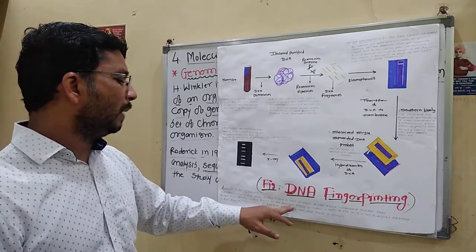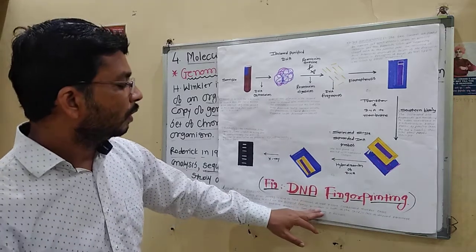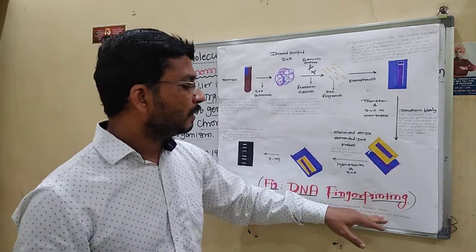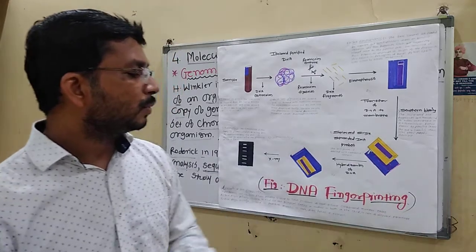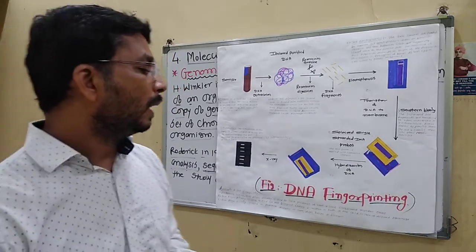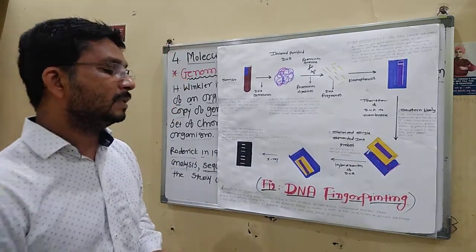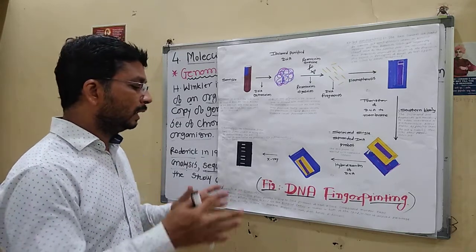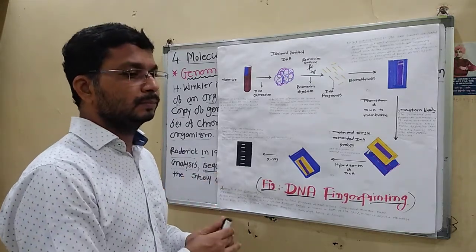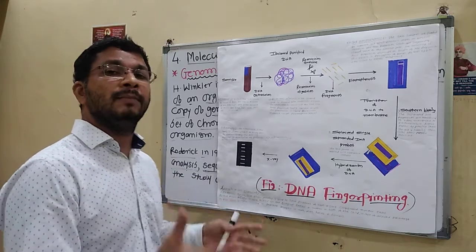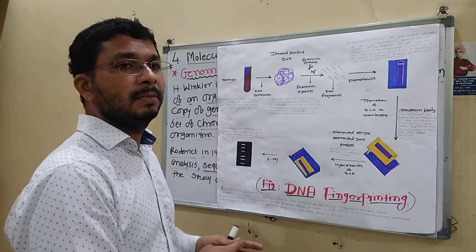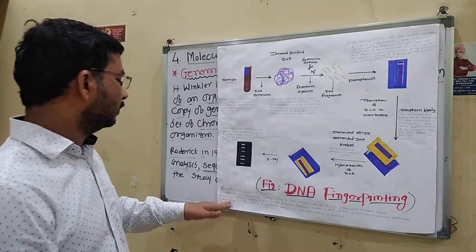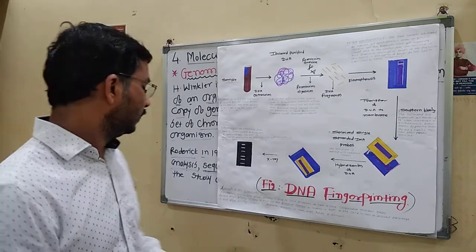DNA fingerprinting is used to find out the biological father or mother of a child. When a father or mother claims 'this child is mine,' at that time fingerprinting plays a very important role. This application is very important in human beings and helps solve their problems.